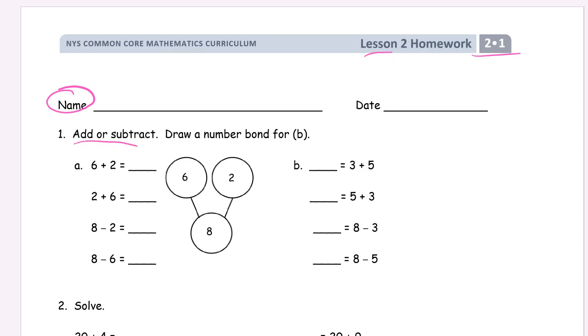Either add or subtract and for the second one, B, we're going to draw a number bond. For A, we already have a number bond drawn for us. Here are the parts. Six and two, those are addends. Those are just numbers we add.